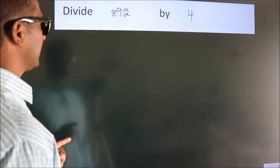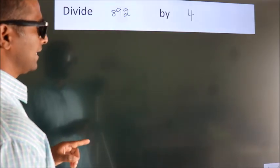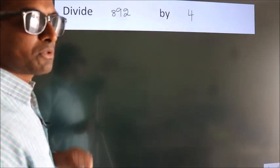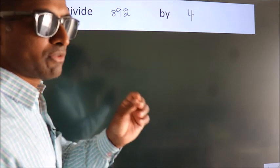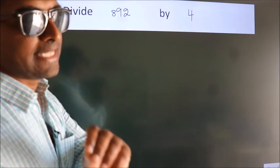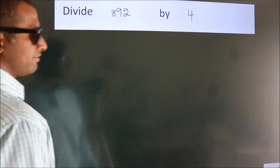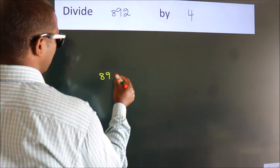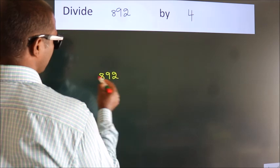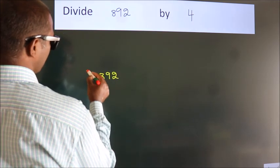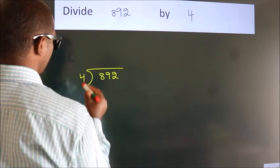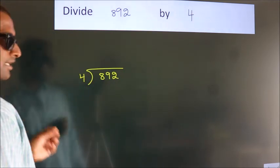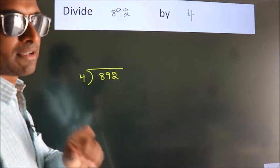Divide 892 by 4. To do this division, we should frame it in this way: 892 here, 4 here. This is your step 1.